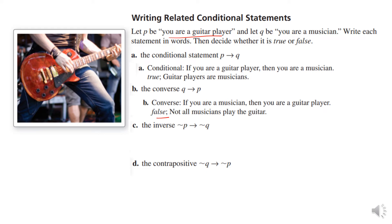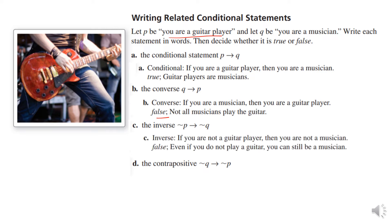The inverse is where we put the negation: if you are not a guitar player, then you are not a musician. That one is false, because you could not be able to play the guitar but still be another kind of musician — piano, organ, whatever.